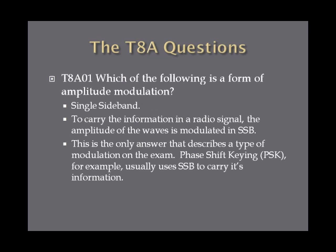Which of the following is a form of amplitude modulation? Single sideband is the form of amplitude modulation on the exam. Amplitude modulation, or AM, has different subcategories. To carry information on this type of radio signal, the amplitude of the waves is modulated — the height of the waves is modulated. This is opposed to FM, which is frequency modulated, meaning how often the waves occur is how it's modulated to carry information. Just remember that single sideband is a form of amplitude modulation.